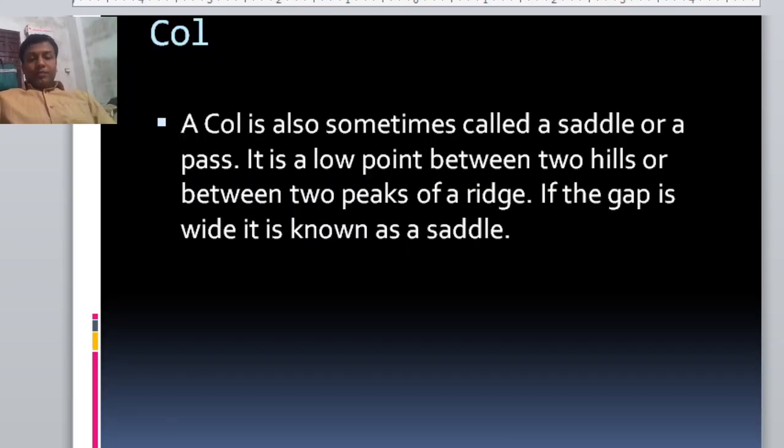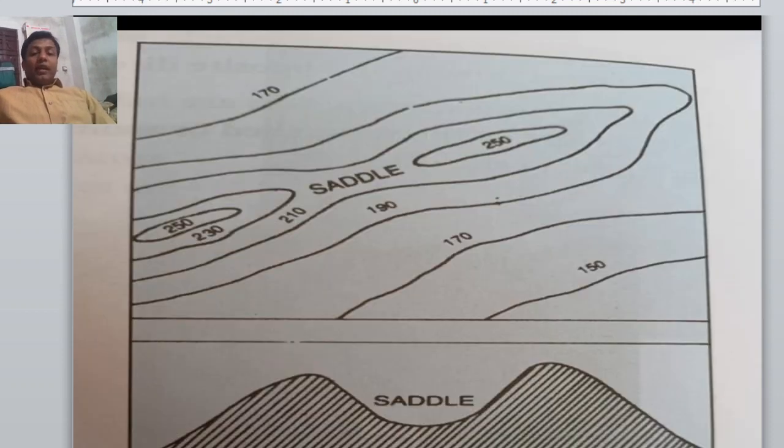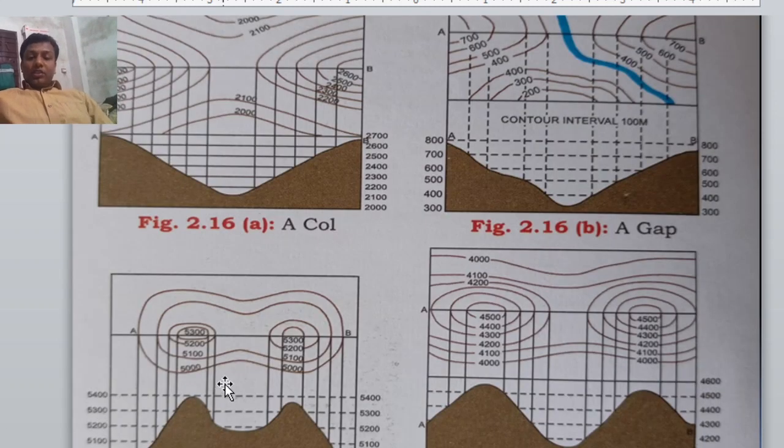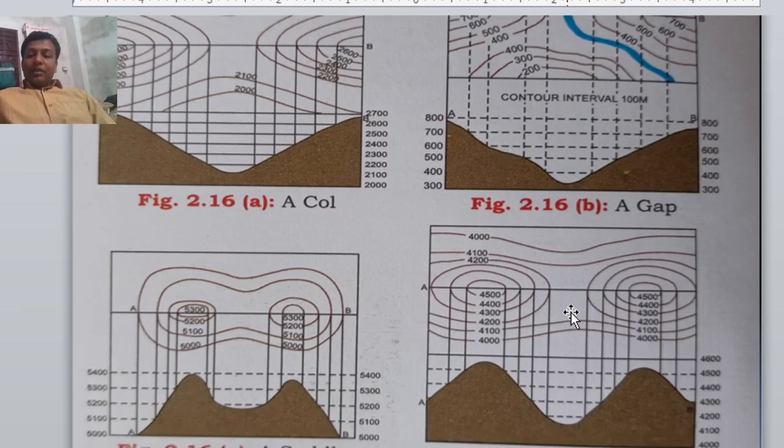Now, col. A col is also sometimes called saddle. It is like saddle-like structure. But it is a low point between two hills or between two peaks of a ridge. And if the gap is wide, then it is known as saddle. So, in this contour, if the gap is not wider, we can say it col. So, like this structure we have, this is col. And this is scent. This is gap. And this is pass.